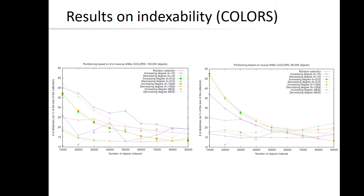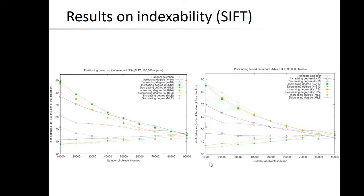These two figures show similar results for the 'SIFT' collection. Although the number of features is similar to that of Colors, the performance of the index ranges from around 40% for the 10,000 easiest objects to around 90% for the hardest objects. This result holds for both centrality measures — both the number of reverse near-neighbors and the number of mutual near-neighbors. Another difference compared to Colors is that the results for SIFT are more regular.